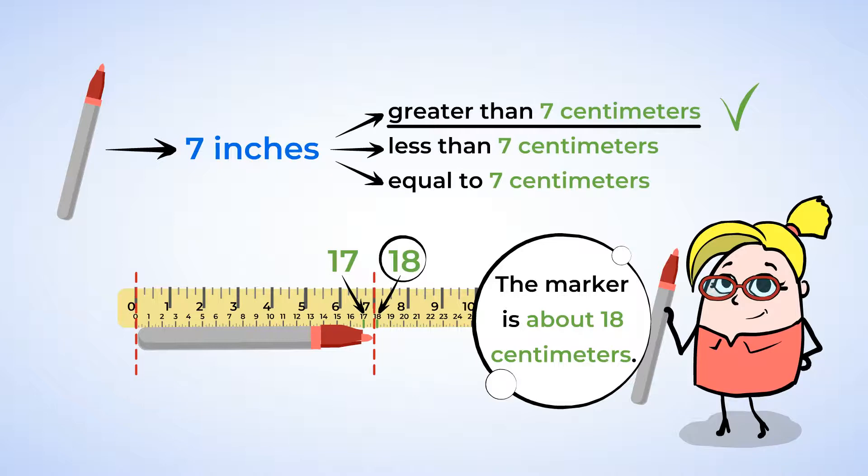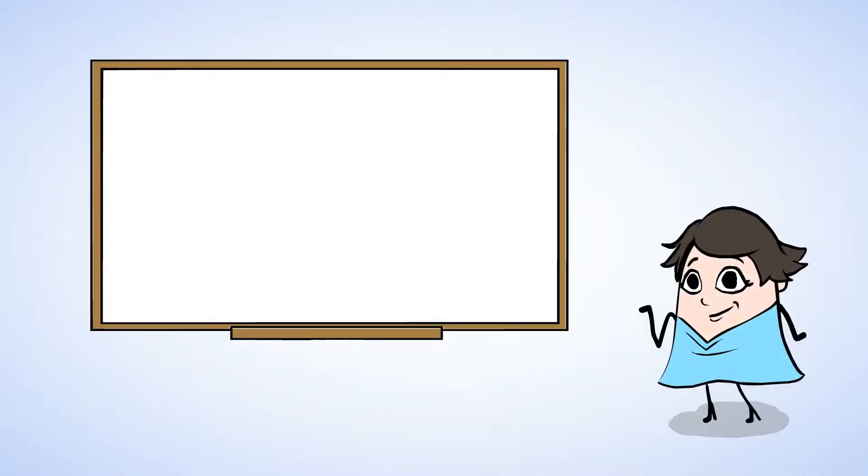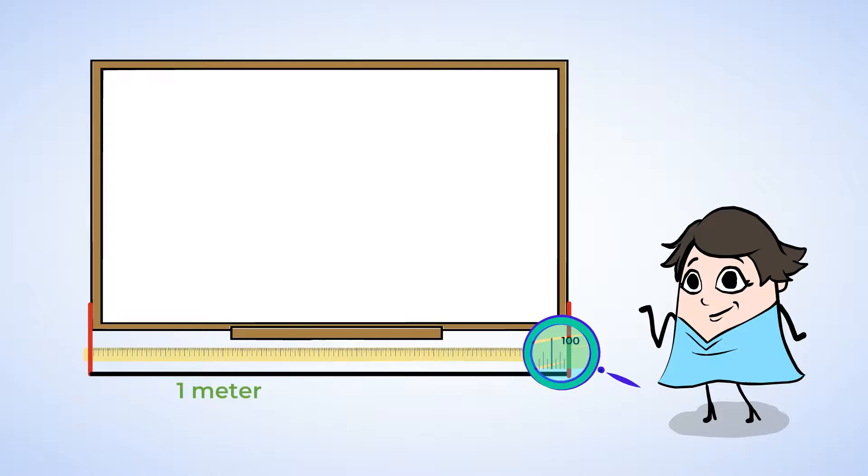You know, we've also measured things in meters before. So let's see how that compares to centimeters and inches. Here's a small whiteboard. Let's measure its length with this meter stick. Now, this whiteboard is exactly the length of a meter stick. Look at that! It's one meter long. But we can also see that it is 100 centimeters long. Well, that's a big difference! That's because a meter is a lot bigger than one centimeter. And so we need a lot more centimeters to measure the same object.